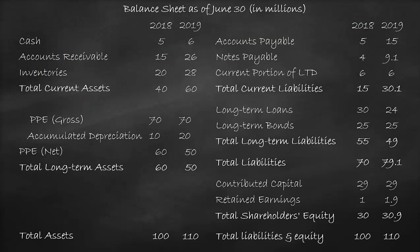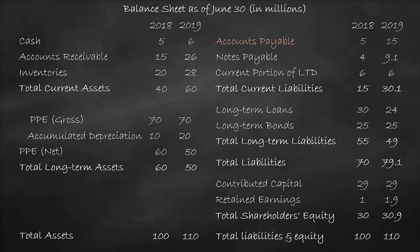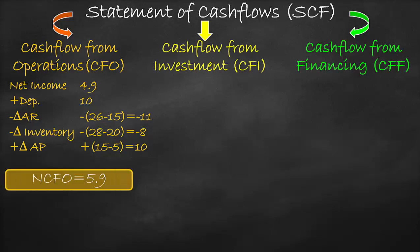Then, a negative change in inventory — negative (28 minus 20) equals negative $8 million. Then, a positive change in accounts payable. We use a positive sign because there is a positive relationship between liabilities and change in cash. Positive (15 minus 5) equals positive $10 million. So, net cash flow from operations is the sum: $4.9 million plus $10 million minus $11 million minus $8 million plus $10 million, which equals $5.9 million.